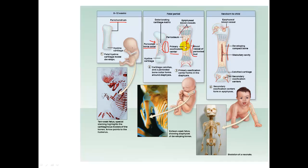The bone development will extend in both directions towards the epiphysis. You will also see the epiphyseal blood vessels that are beginning to form in the epiphysis, or the ends of the long bone, both proximally and distally. That is going to set the stage for the formation of the secondary ossification centers.